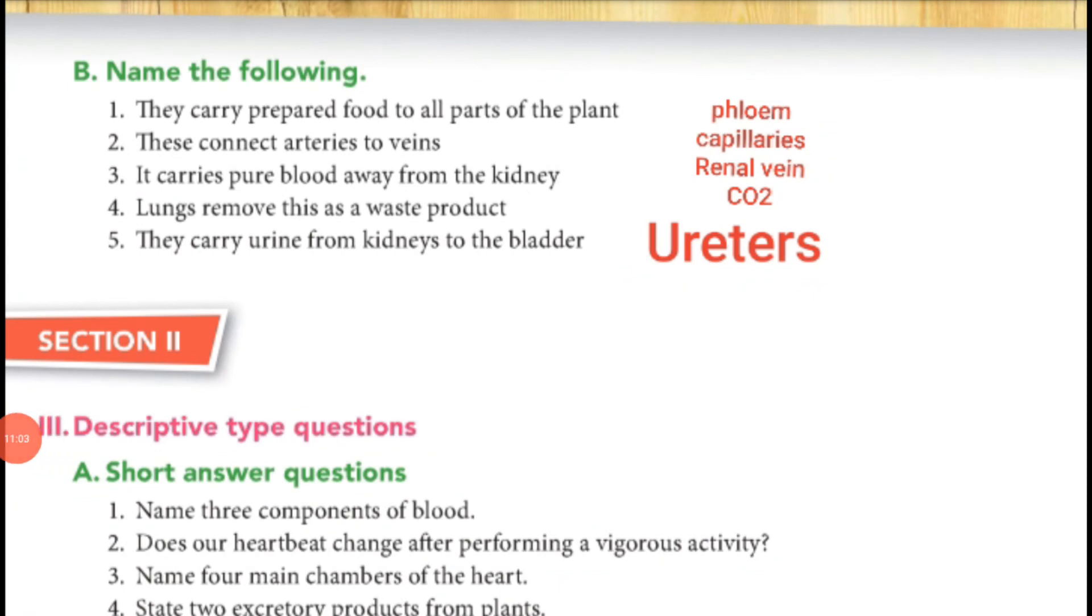Okay guys, turn your page. Name the following. First one, they carry prepared food to all parts of the plant—it is phloem.